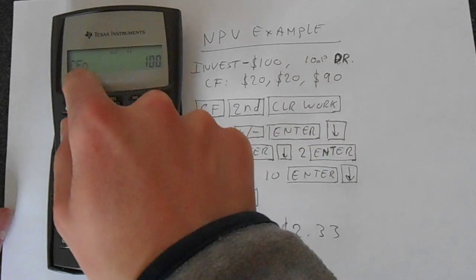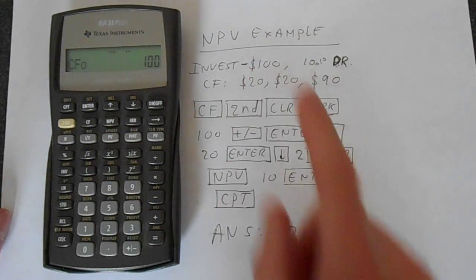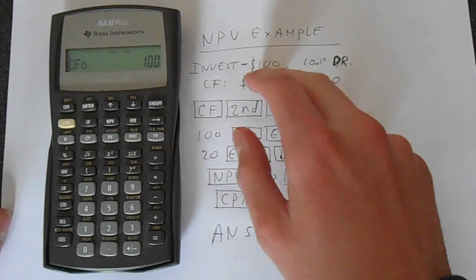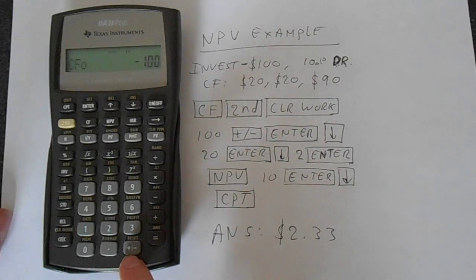Then we enter the cash flows. This is cash flow zero, which is our investment. Cash is going away from us, so cash flow convention makes that negative. We use the plus-minus button to make it negative—don't use this negative key, use the plus-minus.